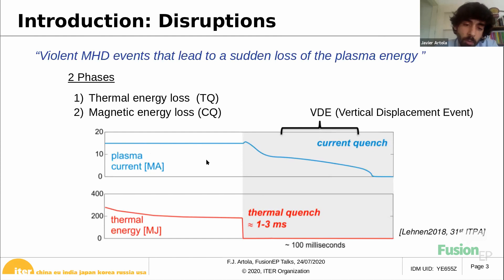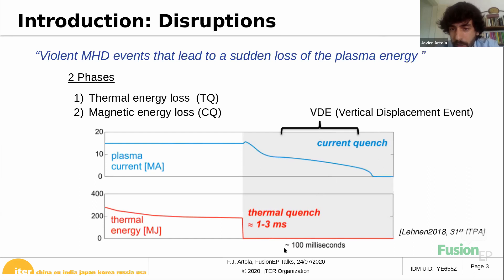This is what we think would happen in ITER. The first phase is the thermal quench, which we expect to happen in one to three milliseconds. Right after you have the current quench, which typically would last around 100 milliseconds. Also, during the current quench, the plasma moves vertically, and we call that a vertical displacement event.